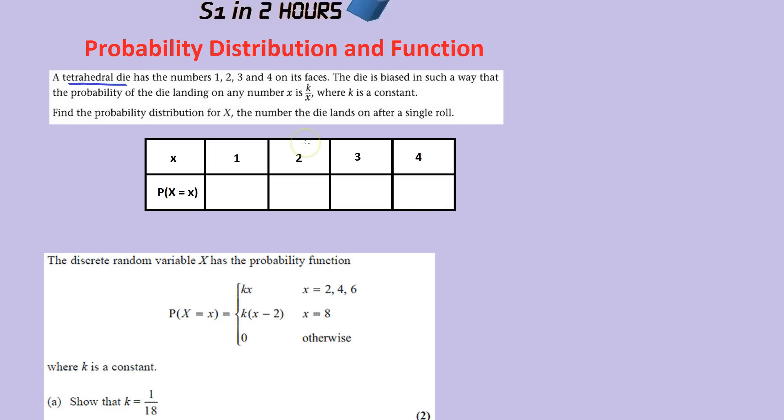The chances of getting a 1, it seems to be, is K over that number. So for a 1, that would be K over 1. What this is also telling you is that the chances of getting a 2 would be K over 2. And we're gradually going to fill in this probability distribution.